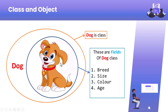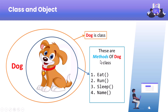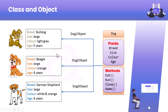For a single dog object, it can contain fields or data members such as breed, size, color, and age. These are nothing but data members — we can also call them instance variables or attributes. Now for the behavior of the dog object, it can have methods like eat, run, and sleep. These are some of the methods that a dog object can have.